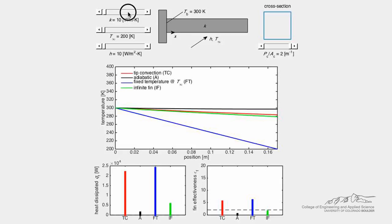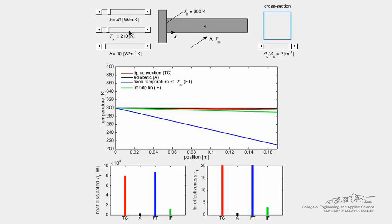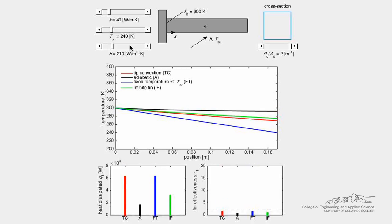Adjust the thermal conductivity of the fin, the ambient fluid temperature, and the heat transfer coefficient with the slider bars. Also adjust the ratio between the cross-sectional perimeter and the cross-sectional area with the slider bar.